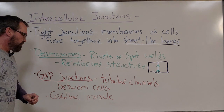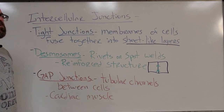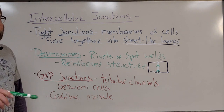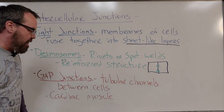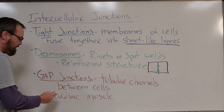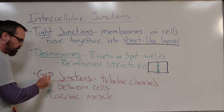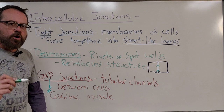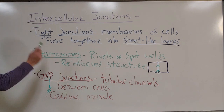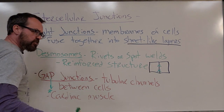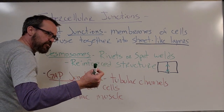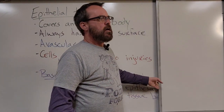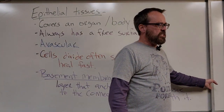And then lastly, we have gap junctions. With gap junctions, we have tubular channels between cells. What we really want to know about gap junctions is that we primarily find them in cardiac tissue. That's the association we want to make — gap junctions and cardiac tissue. And so that covers my basic intercellular junctions, how these cells are coming together and converging to form layers of tissues.